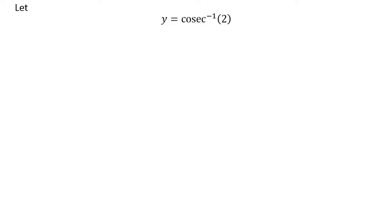Let us assume y is equal to inverse of cosecant of 2. Now, we know the range of inverse of cosecant function is close interval of minus half of pi and half of pi except of 0.